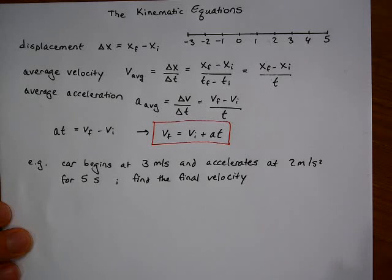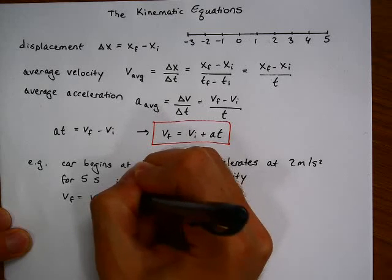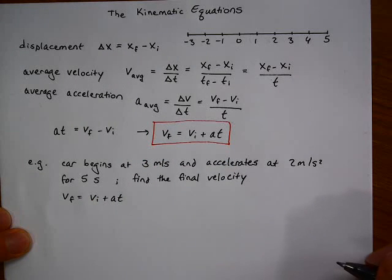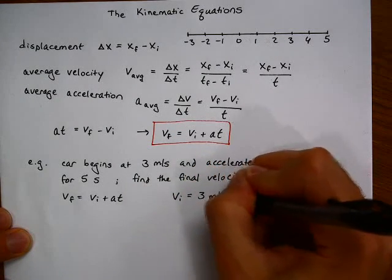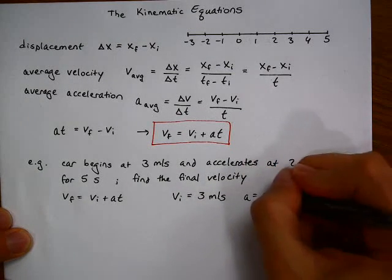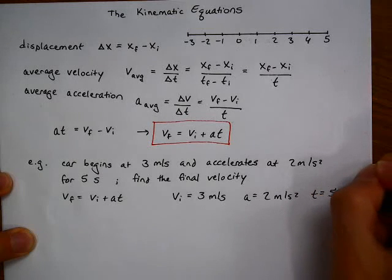Prior to doing that, a good technique to follow is to write down the equation that you need. In the future, we will have multiple equations to choose from and write down the givens. We know that our initial velocity is 3 meters per second, so we write down VI equals 3 meters per second. Our acceleration is equal to 2 meters per second squared, and our time is 5 seconds.